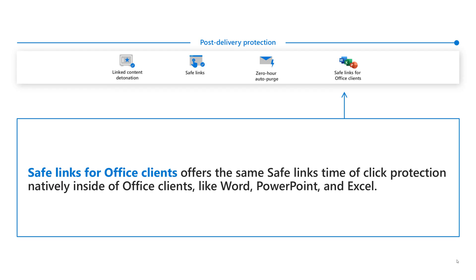This is the overall architecture of Exchange Online Protection and Office 365 Advanced Threat Protection. Special thanks to the engineering teams behind this — great job, everybody. Hopefully this gives you an idea of how these two products come together to better protect you. I encourage you to read more; I'll put some links in the video description to the documentation. If there are any questions, let me know on LinkedIn and Twitter. Take care, bye-bye.